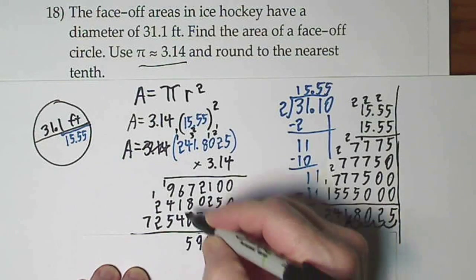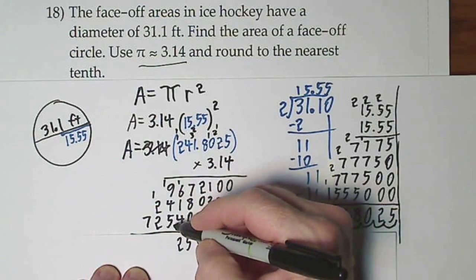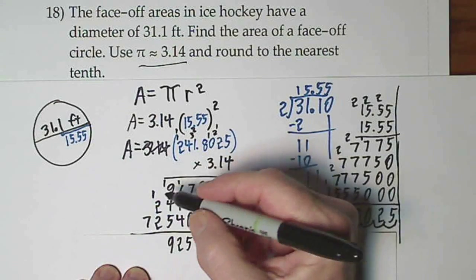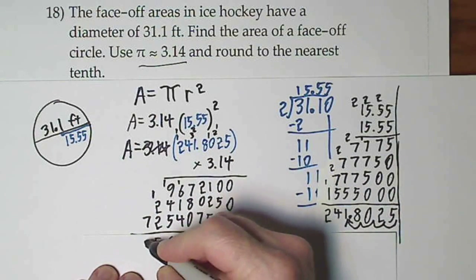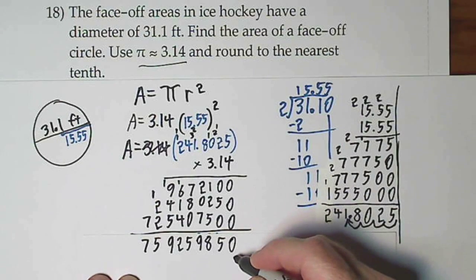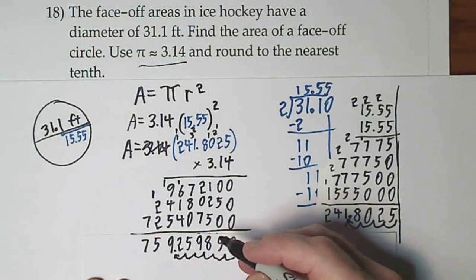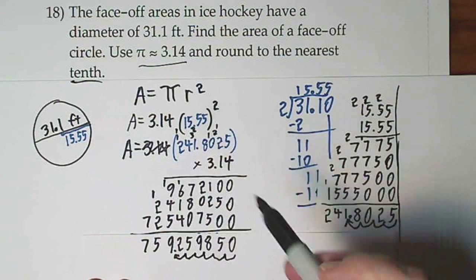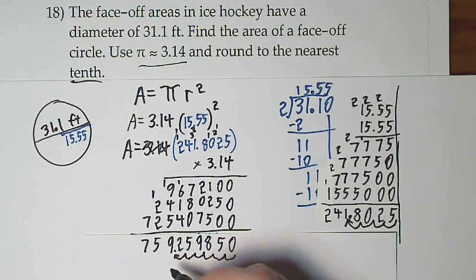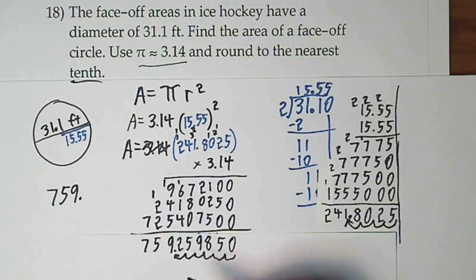So 8 and 7 is 15. And we had 1, 2, 3, 4, 5, 6 spaces we've got to come in: 1, 2, 3, 4, 5, 6. And remember they said round to the nearest tenth. So we stand at the tenths place and look back. A 5 or greater will round up. So this ends up being the area is 759 and 3 tenths.